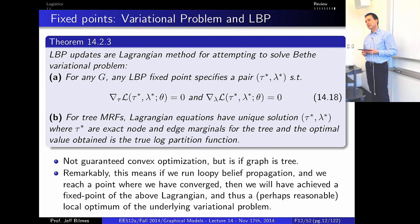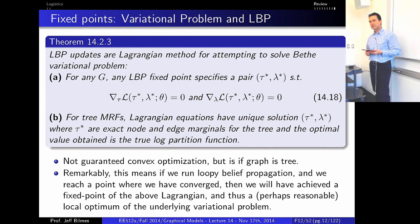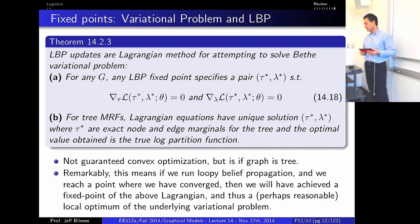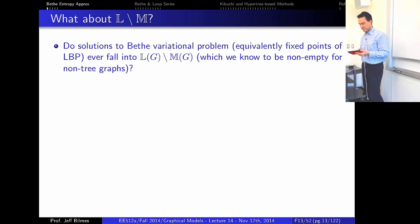If loopy belief propagation converges, that corresponds to finding a fixed point of the Lagrangian — a stable point, possibly a saddle point, not necessarily an optimum. So there's no quality guarantee in general. But this puts LBP — which we motivated from the elimination perspective — in correspondence with the Lagrangian optimization problem, which is really neat.